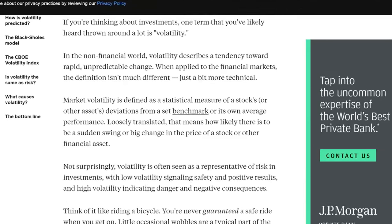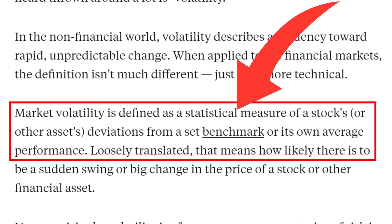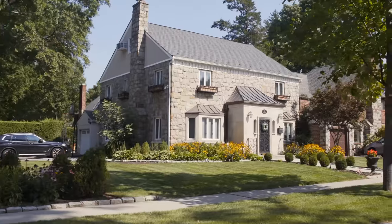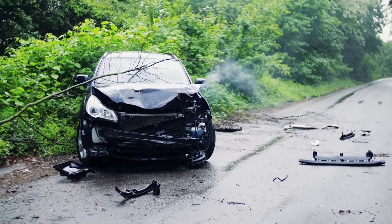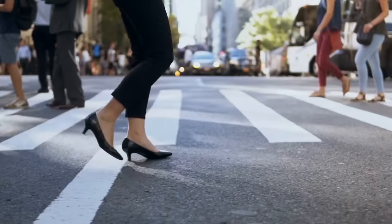Let's start with volatility. Market volatility is defined as a statistical measure of a stock's deviations from a set benchmark or its own average performance. In other words, it's the very definition of what happens when a stock is supposed to do one thing, yet it does something drastically different. Think of it like riding a bike or driving your car down a neighborhood street — odds are things will go just fine, but that doesn't mean you might hit a pothole or have to swerve to avoid a squirrel, and things immediately change drastically.